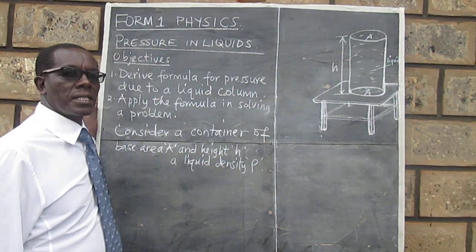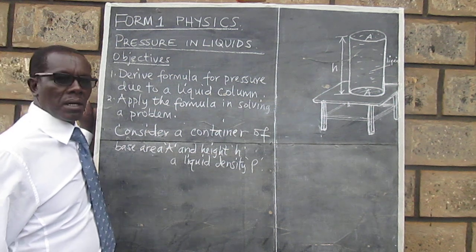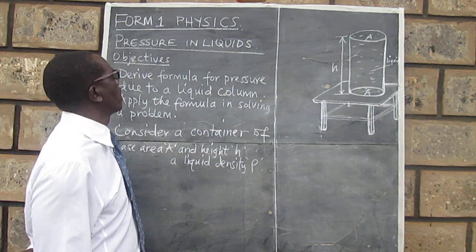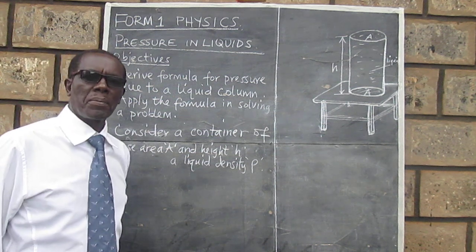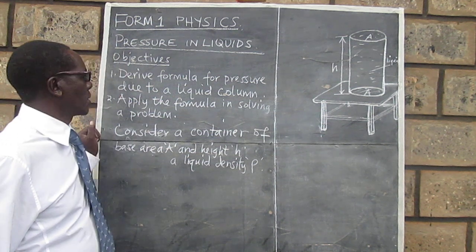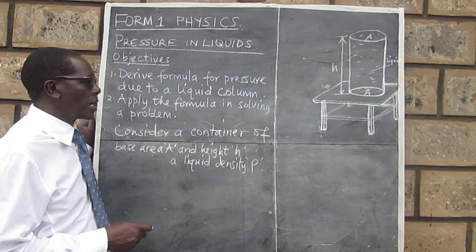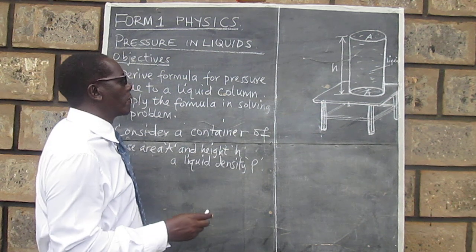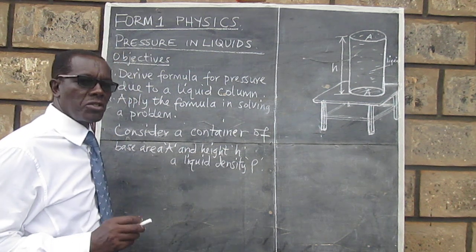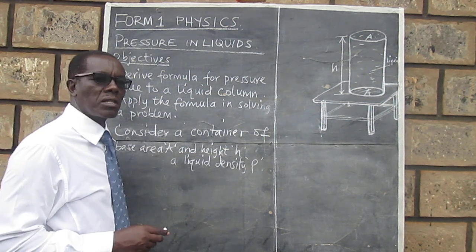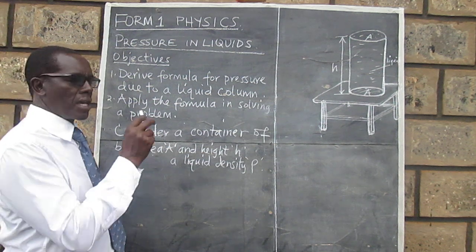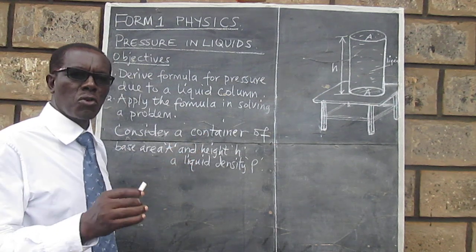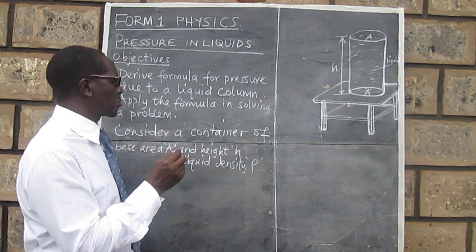Welcome to my physics class. The topic for today is the pressure in liquids, which is a topic in form one. The objectives for today are two: we would like to derive a formula for calculating pressure due to a liquid column, and then after we've gotten the formula, we will use it in solving a problem.